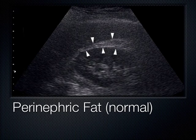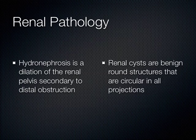Around the kidney we frequently see perinephric fat — our eye is drawn to bright structures, but it's just visceral fat, nothing to get excited about. When looking at a kidney, we break it into whether something is in the cortex or in the collecting system — also called the renal pelvis or sinus. If something is anechoic and spherical out in the cortex, it's a renal cyst. But if you see anechoic fluid in the center or pelvis of the kidney, that's hydronephrosis.